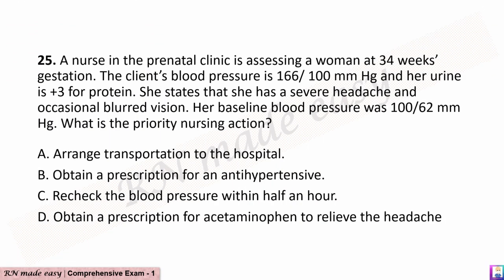Question 25. A nurse in the prenatal clinic is assessing a woman at 34 weeks gestation. The client's blood pressure is 166/100 mmHg and her urine is +3 for protein. She states that she has a severe headache and occasional blurred vision. Her baseline blood pressure was 100/62 mmHg. What is the priority nursing action? A. Arrange transportation to the hospital. B. Obtain a prescription for an antihypertensive. C. Recheck the blood pressure within half an hour. D. Obtain a prescription for acetaminophen to relieve the headache.